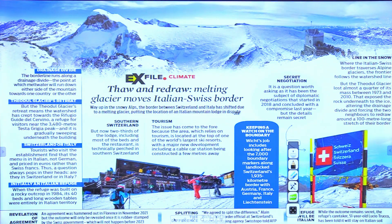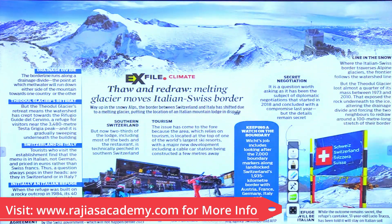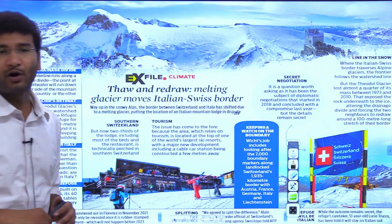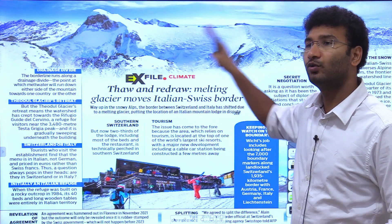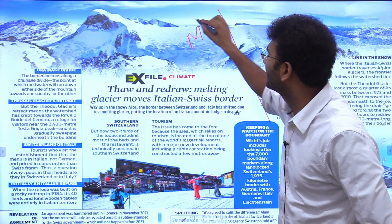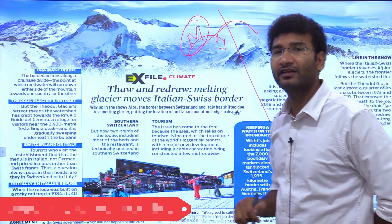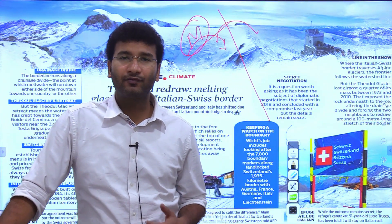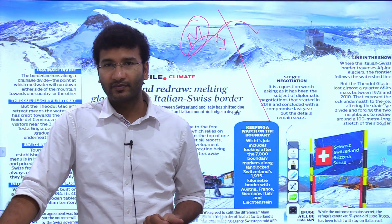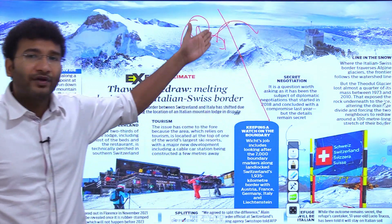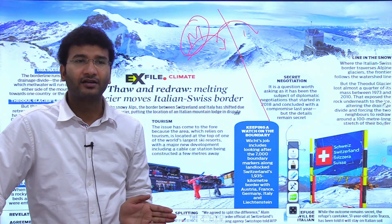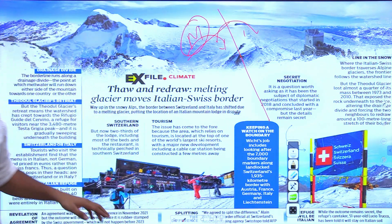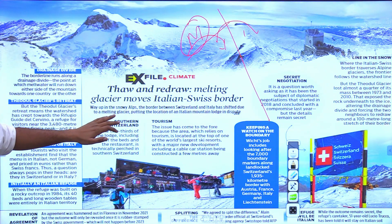The next article is about a boundary change between Switzerland and Italy due to glacier melting. This is an article associated with climate change. In descriptive examinations, you can use this as an example of how climate change affects international boundary lines. As glaciers melt, the boundary line recedes into the Switzerland side, meaning Italy's effective territory increases — which can create war-like situations in the future.